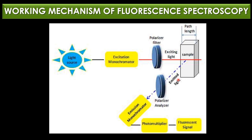After excitation, the sample emits fluorescent light typically at a longer wavelength than the excitation light. The emitted light passes through a polarizer analyzer, which filters the emitted light based on its polarization — useful for analyzing anisotropy properties. The emission monochromator then selects the wavelength of emitted light to be detected. A photomultiplier tube, a highly sensitive detector, measures and amplifies the emitted fluorescence signal, making it easier to detect lower levels of fluorescence.